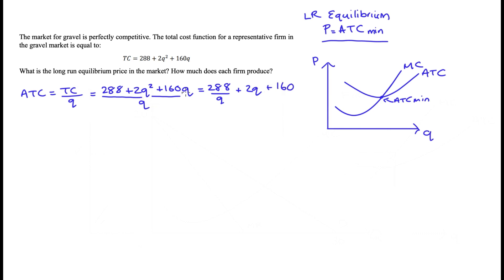Our marginal cost is just the derivative of our total cost function with respect to quantity, so with respect to q. Now the constant drops out; the 2 here will come out the front and multiply the 2, so we get 4q, and 2 minus 1 is 1, so we just leave it as 4q, and then plus 160. This q drops out, and that's our marginal cost.